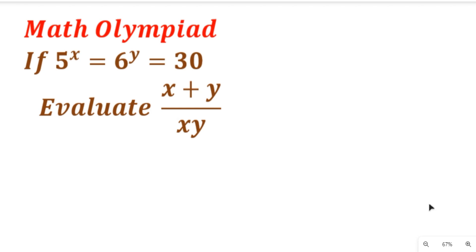I love Math Olympiad because their questions are always logical and you need real logical reasoning to solve such questions. Now from this question, we are told that 5 to the power of x is equal to 6 to the power of y and both of them are equal to 30, so we'll see how we are going to find and evaluate this value.